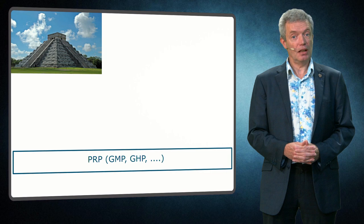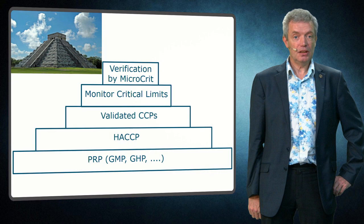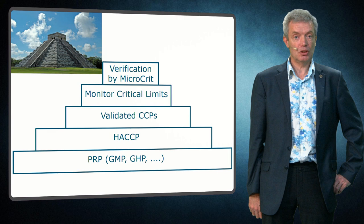You first need your prerequisite programs like GMP and good hygiene. Then you need a good HACCP plan. You need to validate your CCPs and then you are going to monitor your critical limits. And if you have done all that, finally you are going to verify the adequacy of your sampling plan by using microbiological criteria.